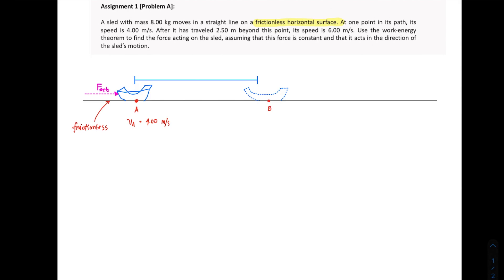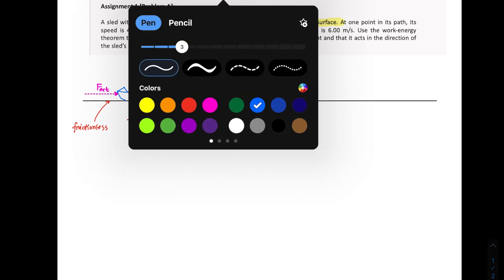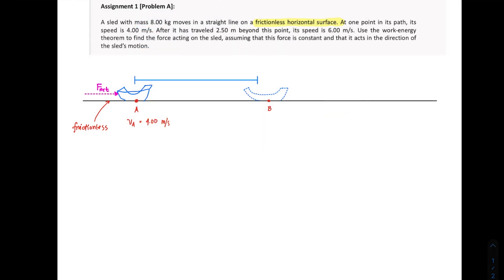The problem also states that at one point in its path, its speed is given to be 4 meters per second, and after it has traveled 2.50 meters beyond this point, the speed is now at 6 meters per second. Use the work energy theorem to find the force acting on the sled, assuming that this force is constant and that it acts in the direction of the sled's motion.